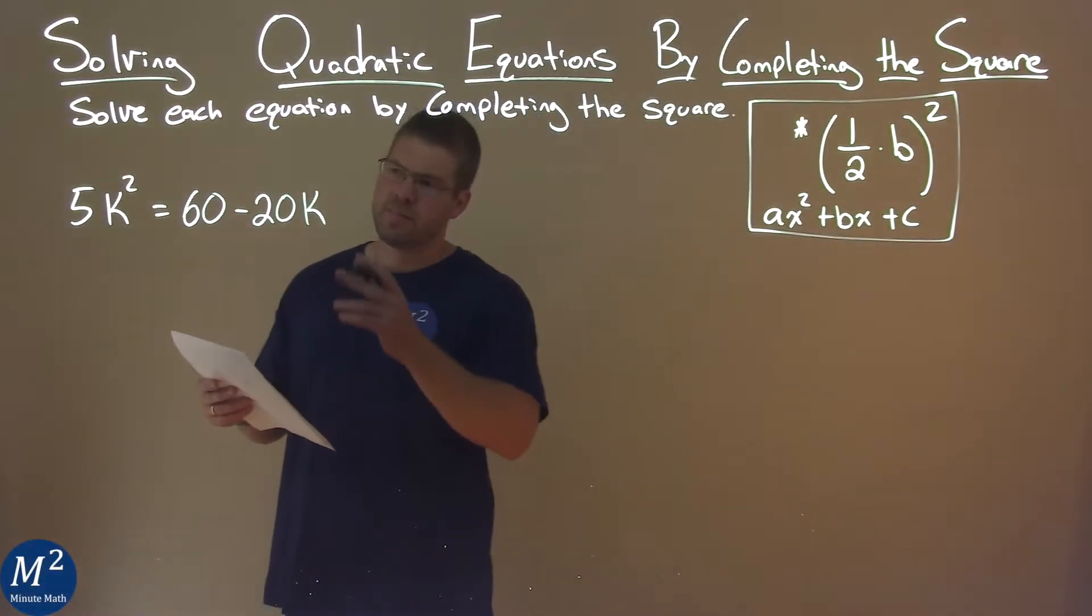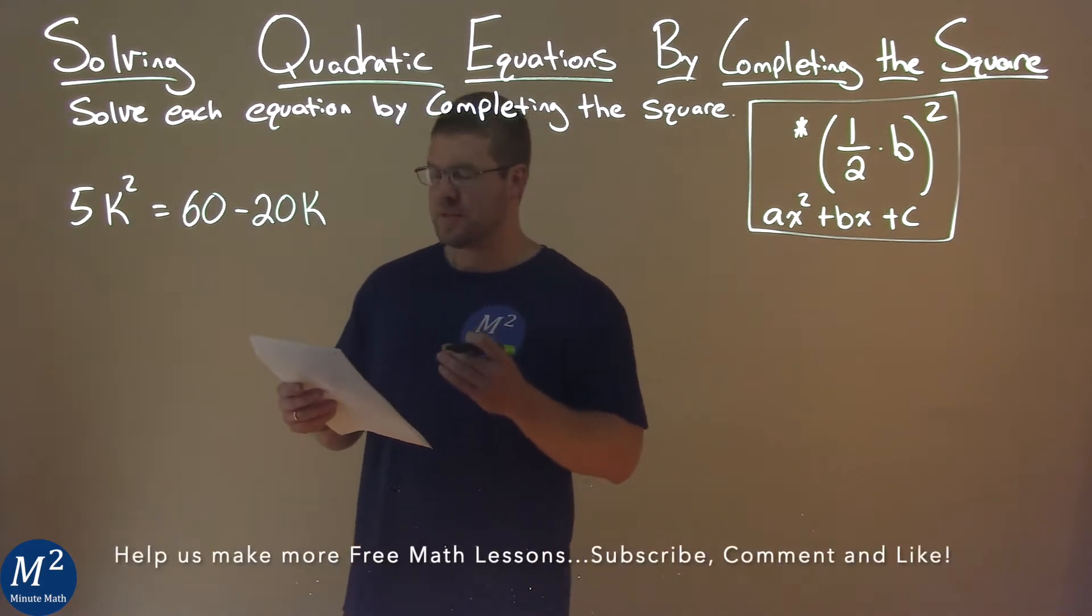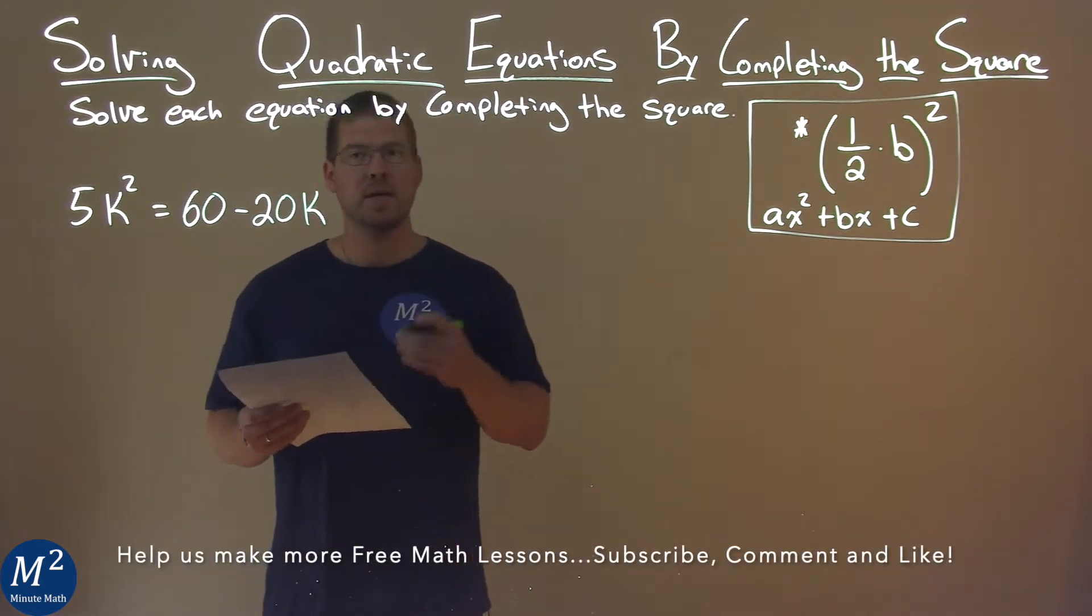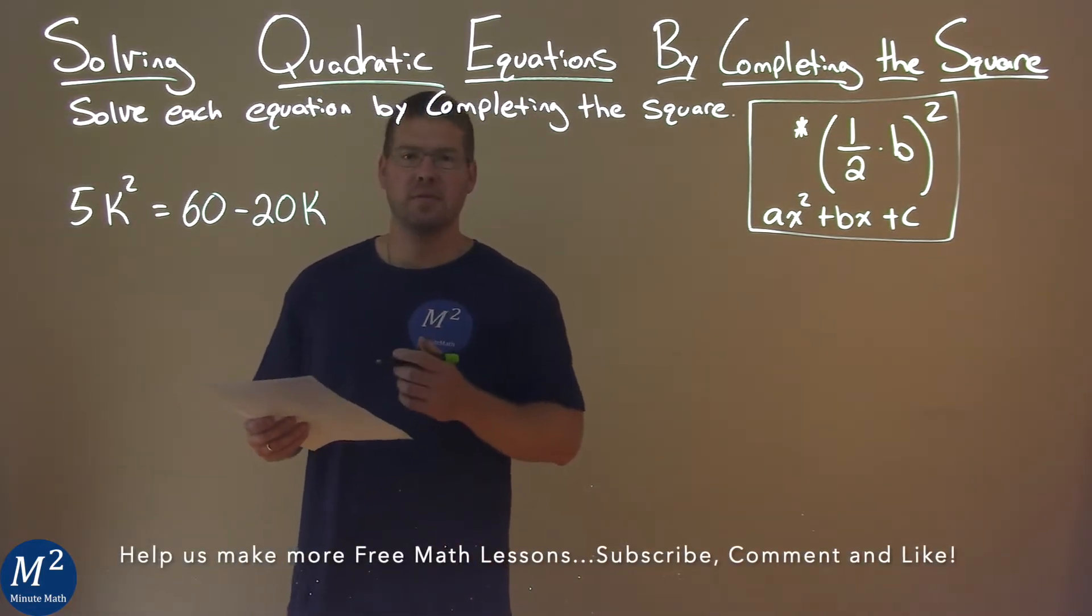We're given this problem right here, 5k squared equals 60 minus 20k, and we need to solve this by completing the square.